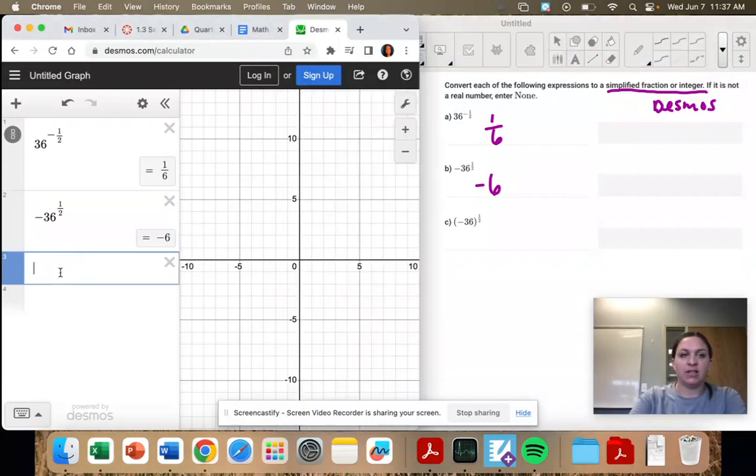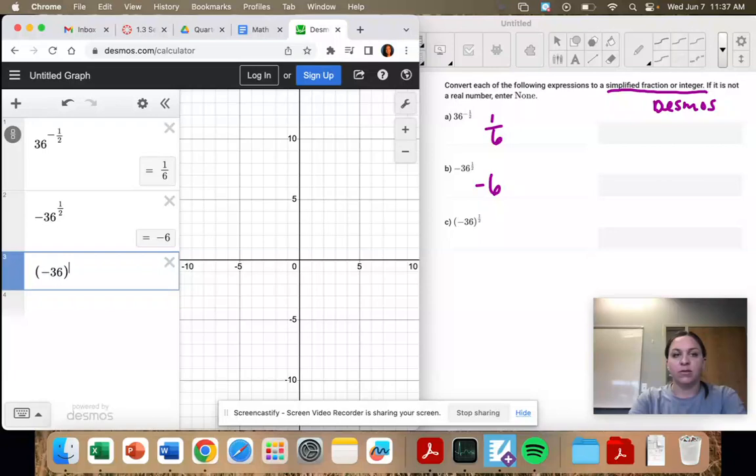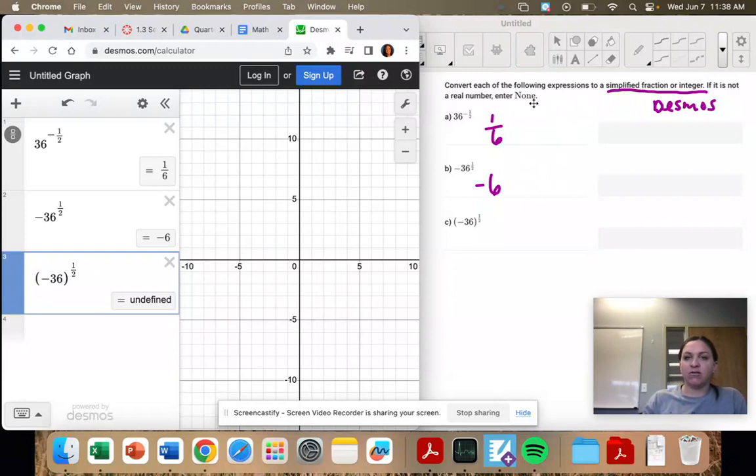And our last one has the negative 36 in parentheses. There we go, there's our undefined. That means it's not a real number.